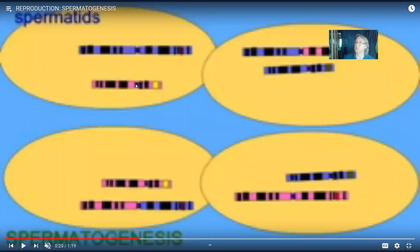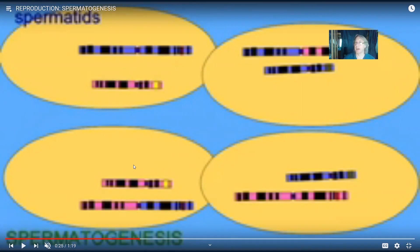Each spermatid has one of each chromosome — not two of each. A diploid cell would have two of each; these are haploid. Notice that when we make gametes, two processes occur: the independent assortment of chromosomes, meaning not all chromosomes from one parent end up in the same sperm, and crossing over, where some of a man's genes from his mother can be cut from her chromosome and pasted onto the chromosome inherited from his father. This allows the genetic information in different sperm to be different. The same applies in ovaries.